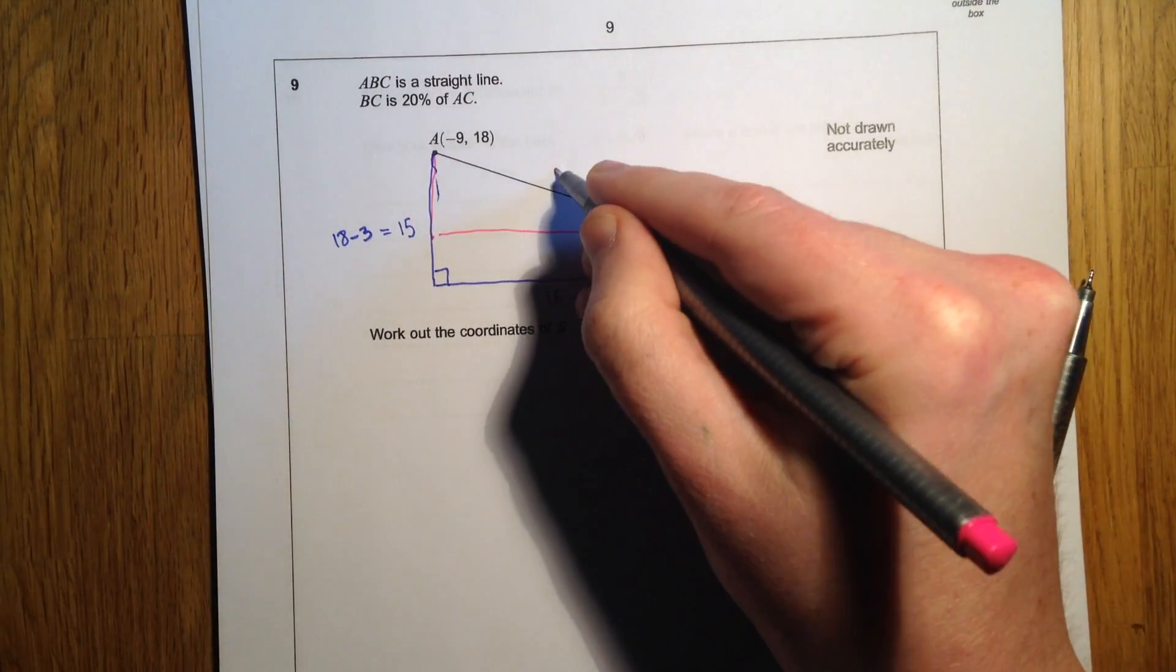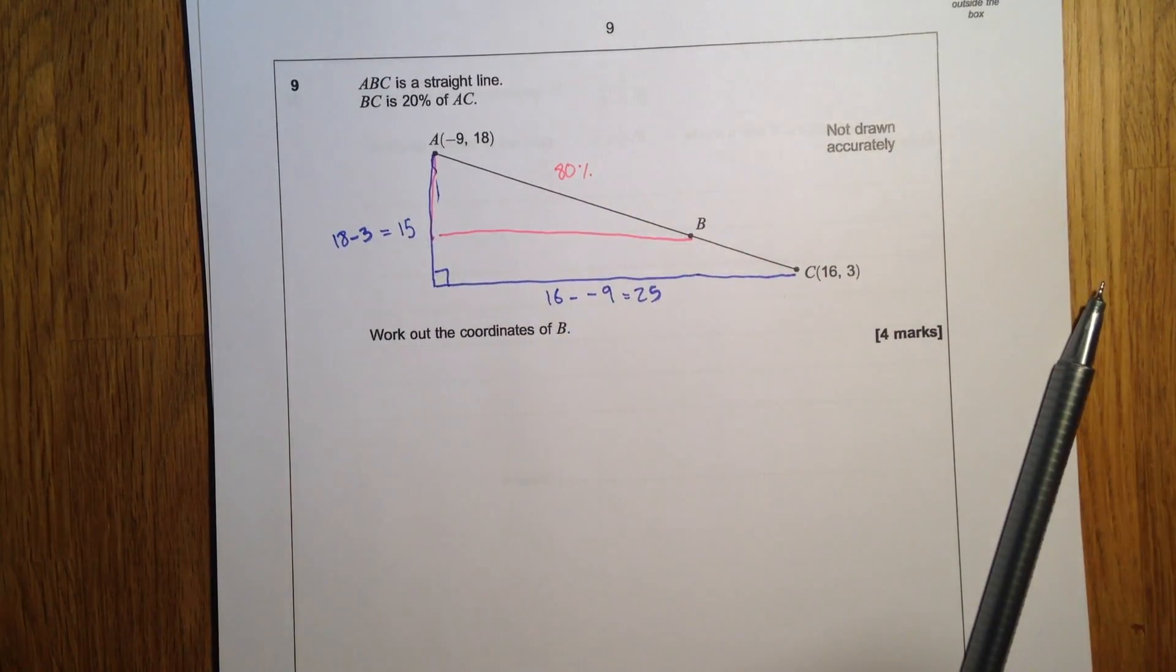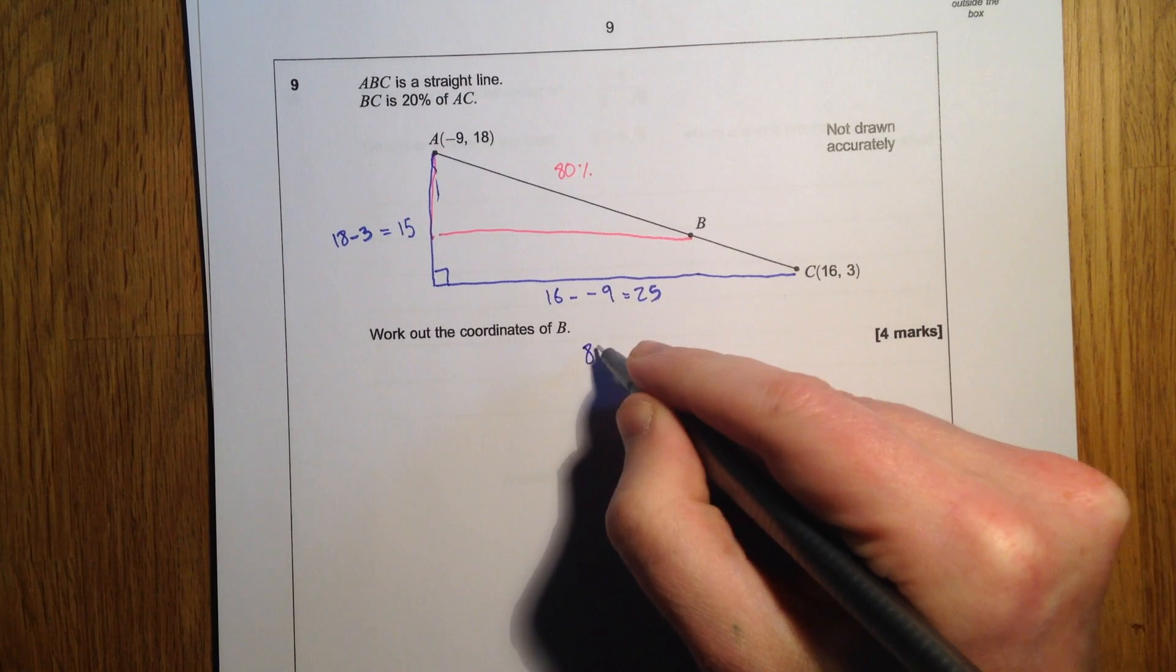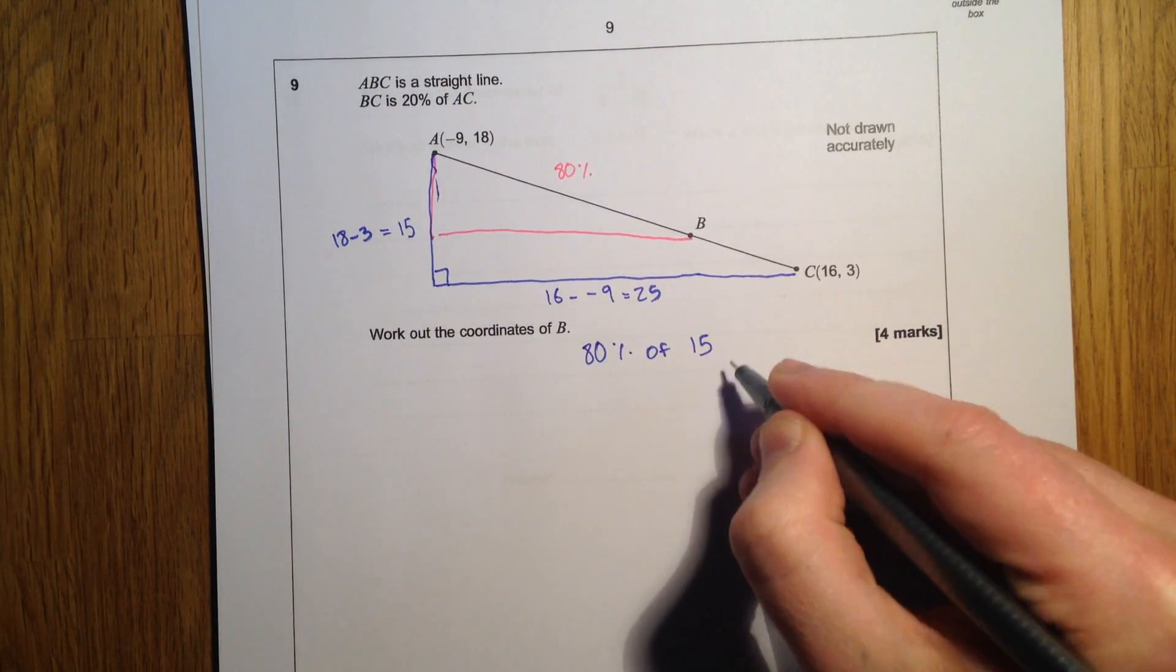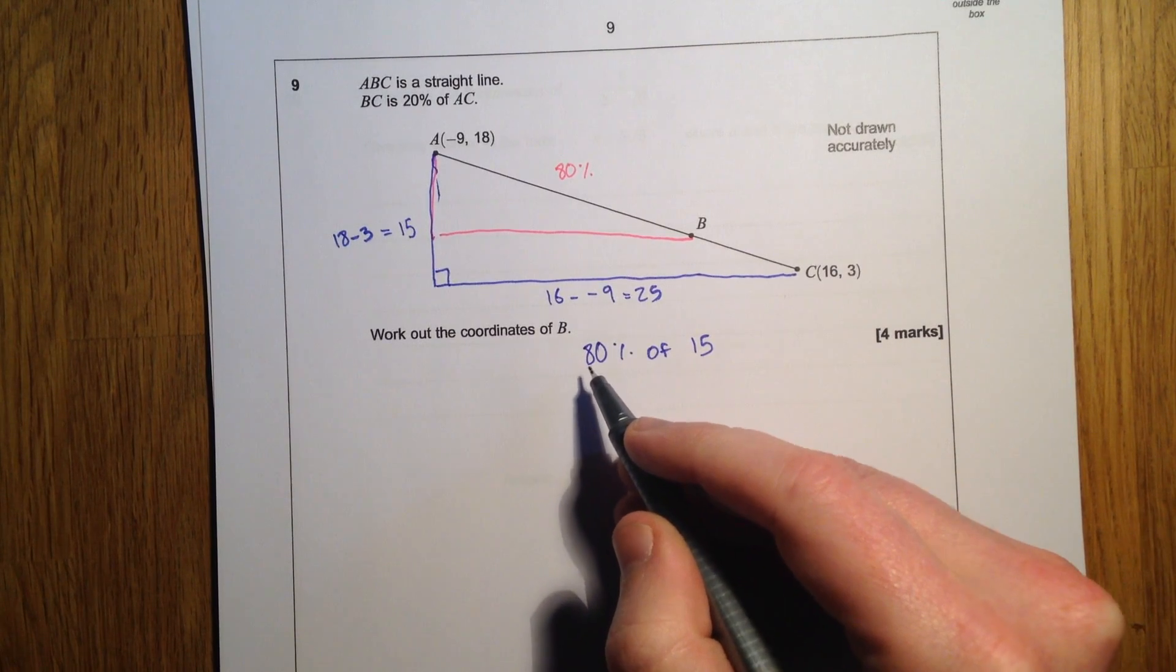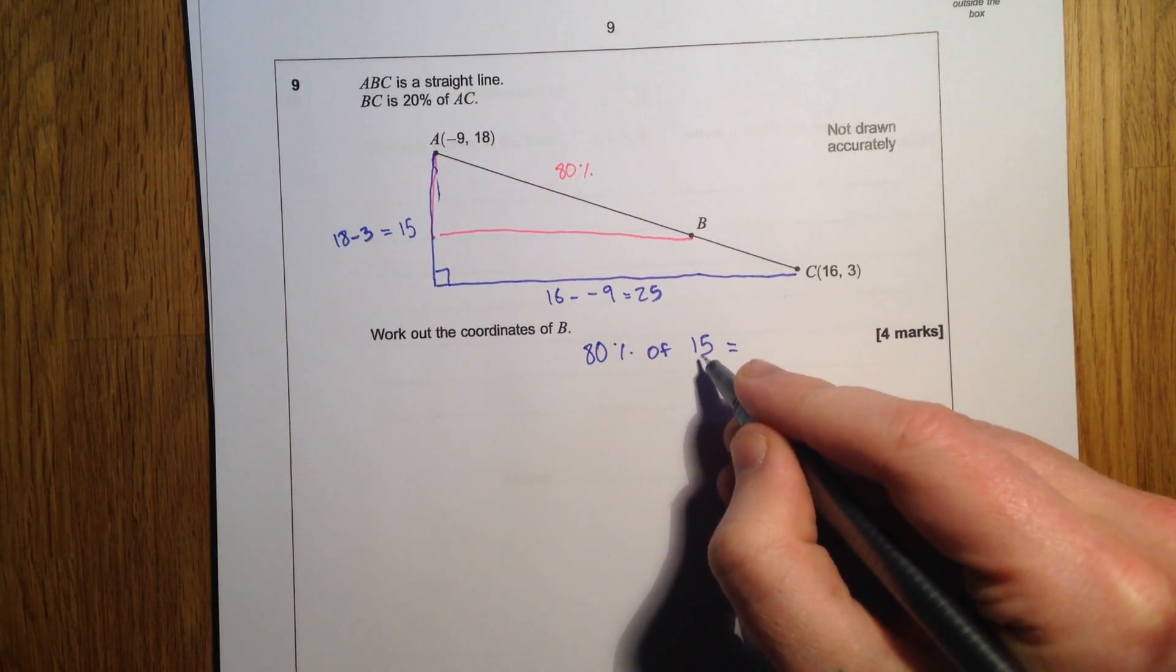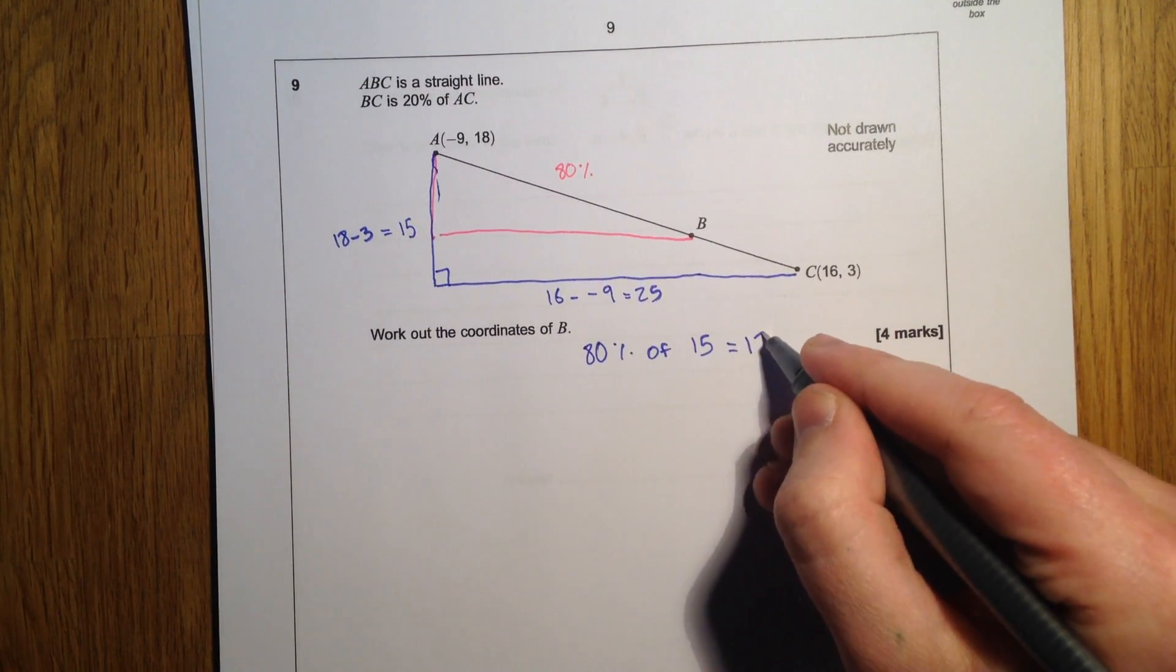So this bit here is 80%, because the rest is 20%, so we want 80% of 15. Well 10% would be 1.5, 20% would be 3, so the remaining 80% is going to be 3 less than this, so it's going to be 12.